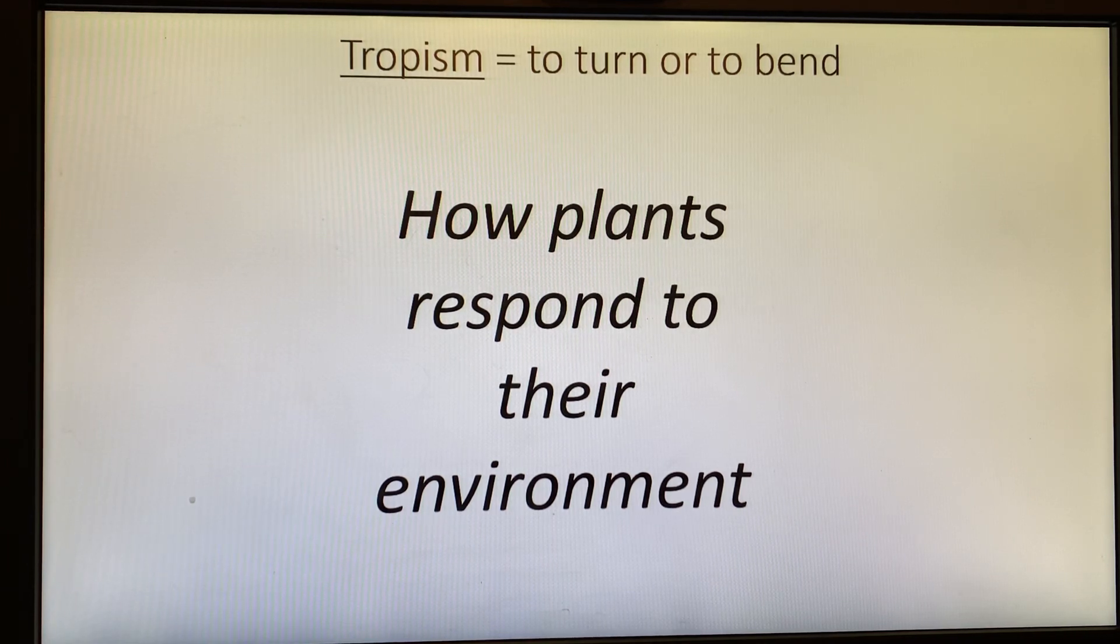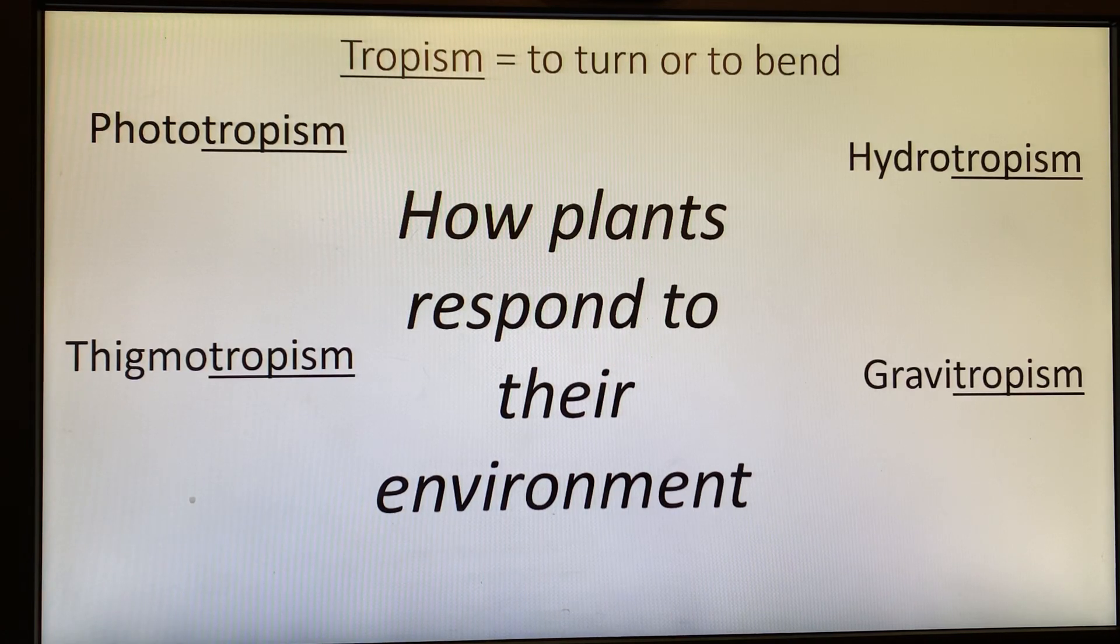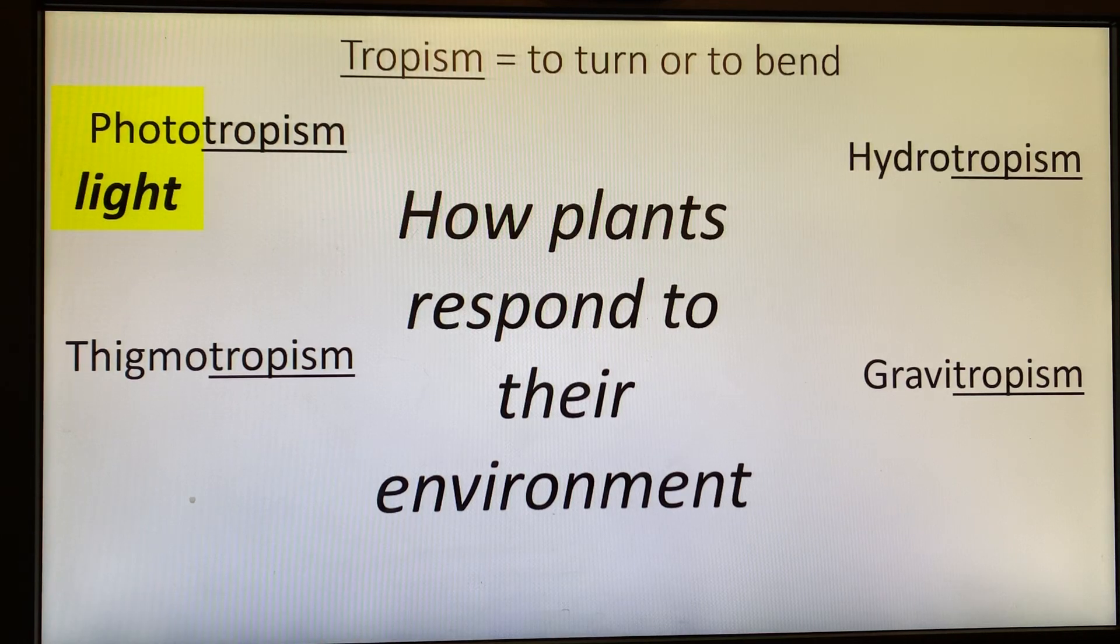There are four types of tropism: phototropism, hydrotropism, thigmotropism, and gravitropism. Let's look at the prefixes on each one of those words. Photo means light, so a plant responding to light. Makes sense, they need it to survive.